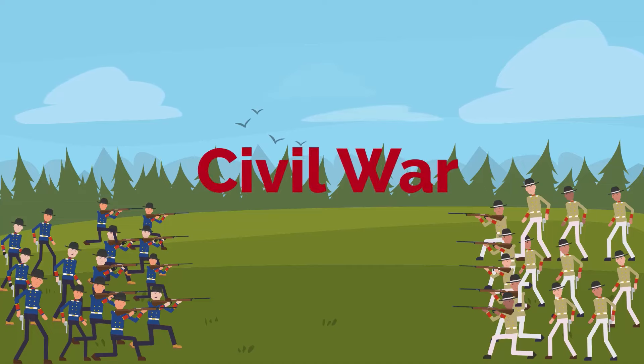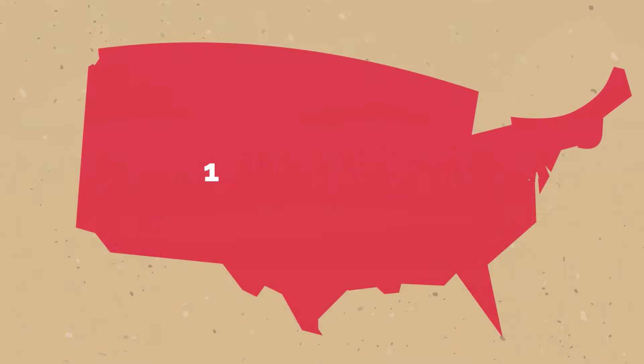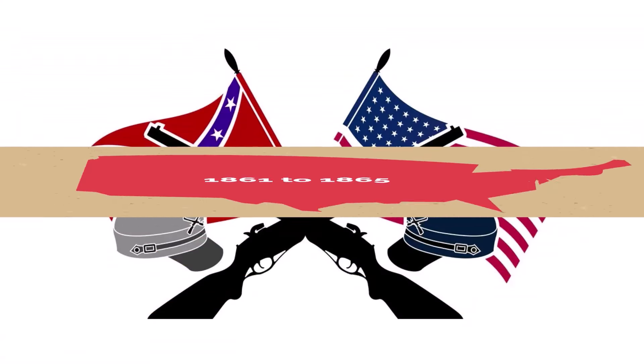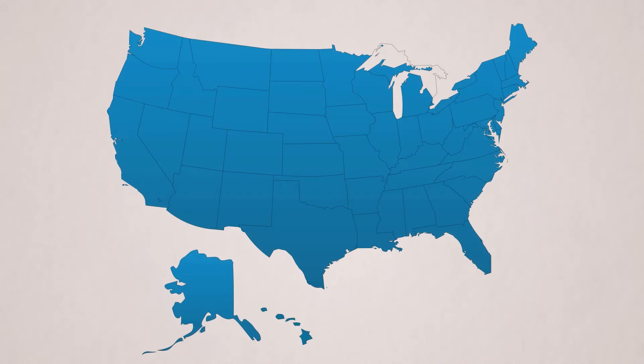The Civil War was a war in the United States from 1861 to 1865, fought between northern states loyal to the Union and southern states that had seceded to form the Confederate States of America.